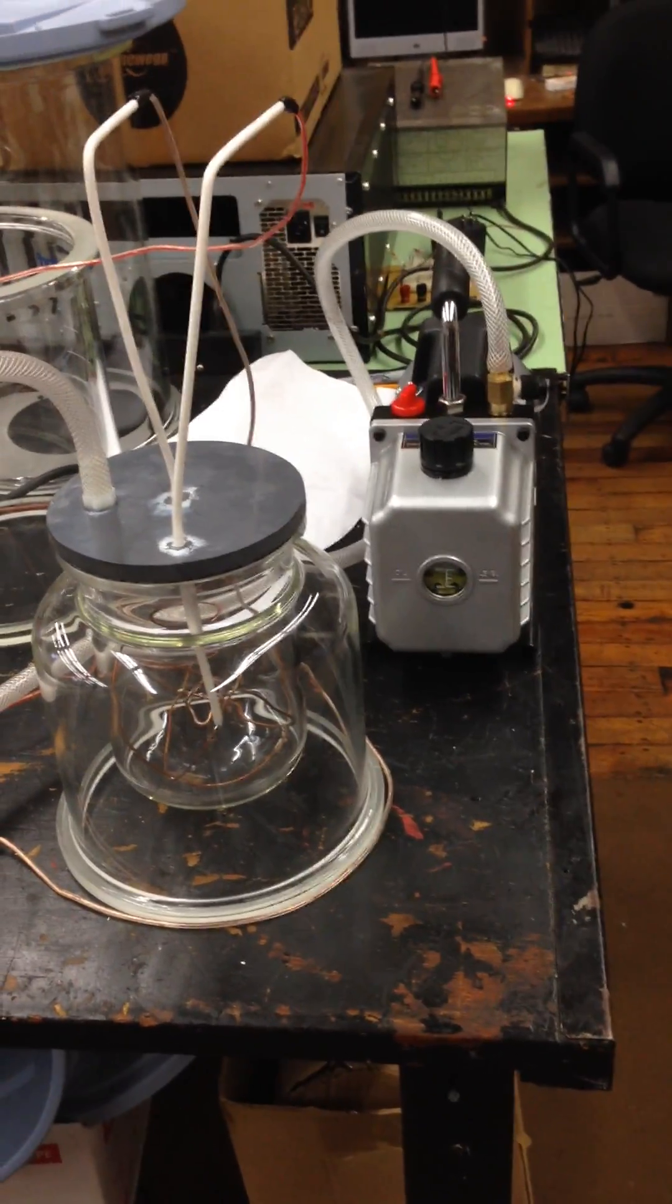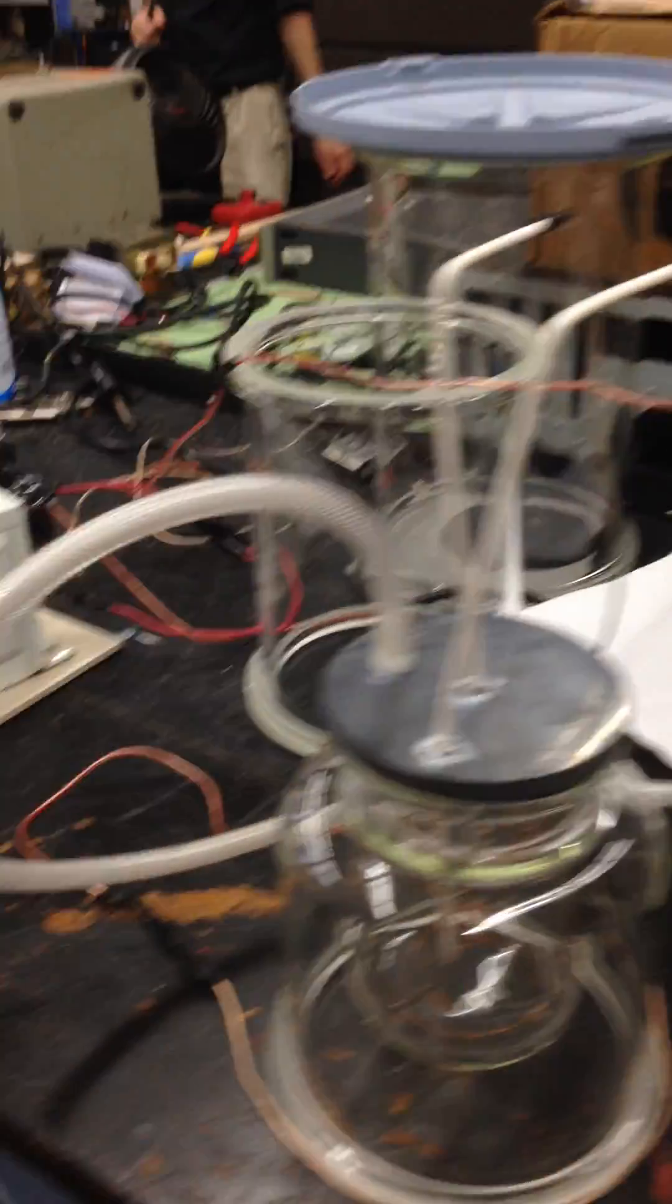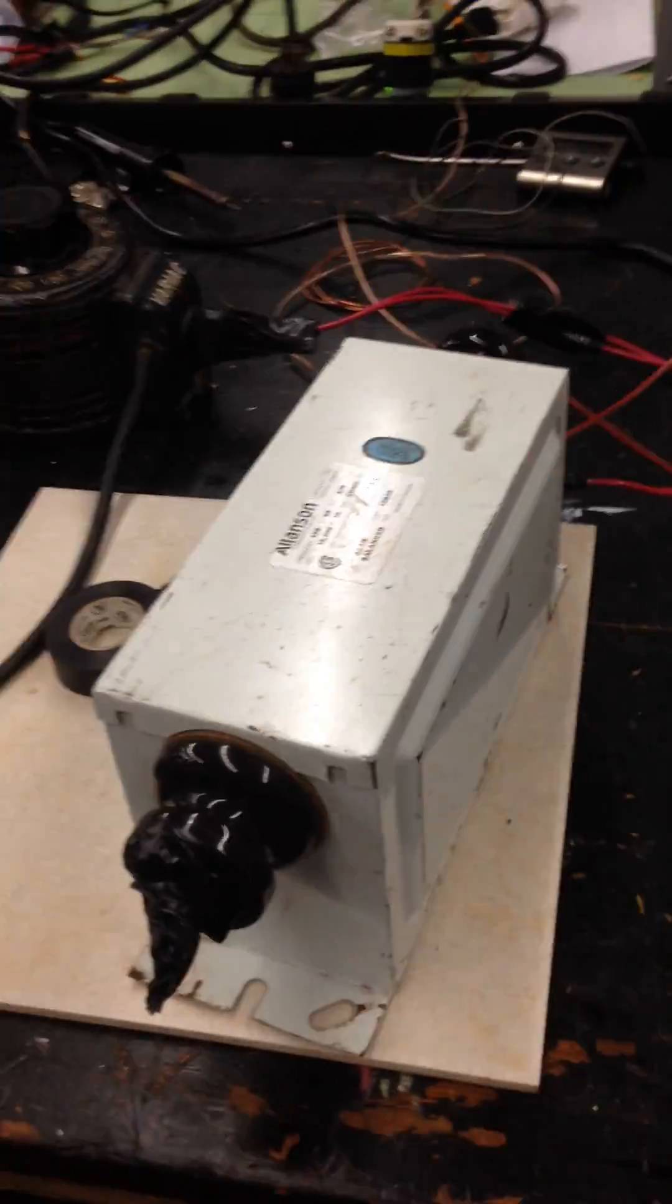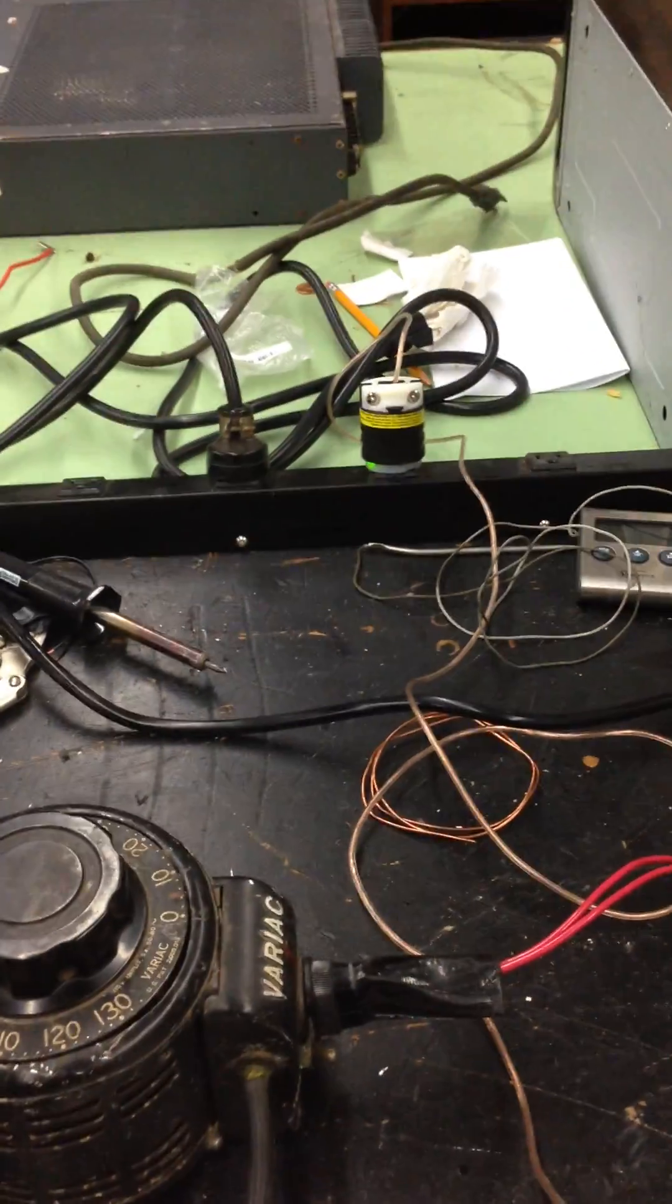Okay, well so here it is with the vacuum pump running something down. You got your neon sign transformer hitched up through the variac, plugged in, so let's turn her on.